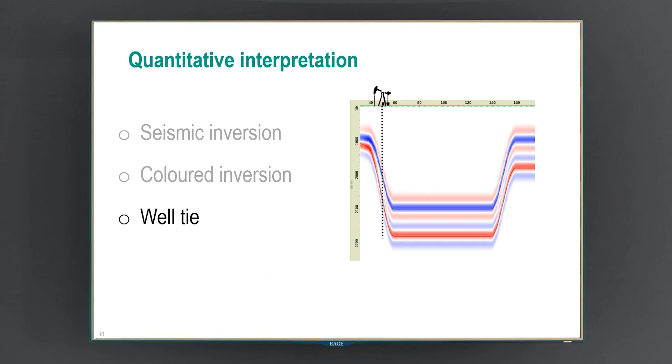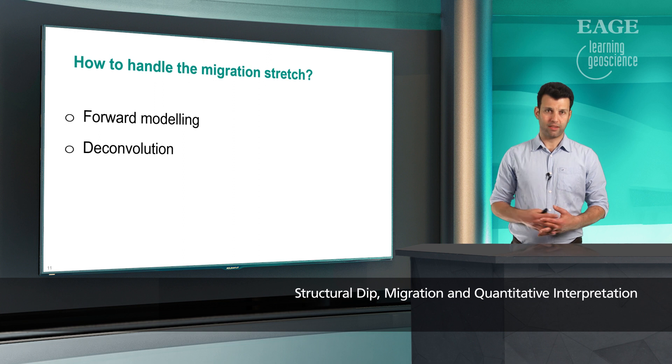As mentioned, convolution is also present in well tie. In this case, assuming we have a well cutting through the dipping event, the idea is to recover the wavelet. And if there is a stretch, that could be passed to the corresponding wavelet.